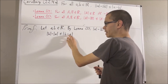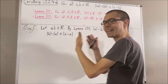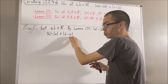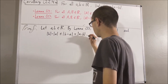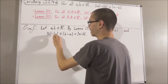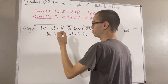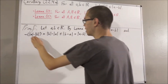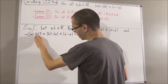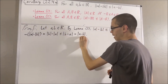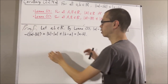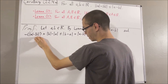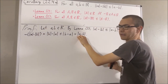Now we know that b minus a and a minus b are negatives of each other, so the absolute value of b minus a is equal to the absolute value of a minus b. In addition, the absolute value of b minus the absolute value of a is the negative of the absolute value of a minus the absolute value of b. So what we see is that the negative of the absolute value of a minus the absolute value of b is less than or equal to the absolute value of a minus b. Multiplying both sides by negative one, the absolute value of a minus the absolute value of b is greater than or equal to the negative of the absolute value of a minus b.